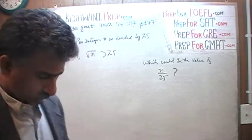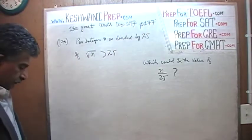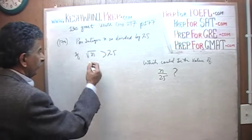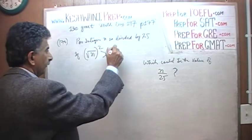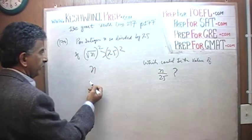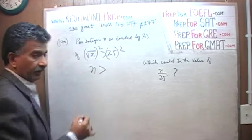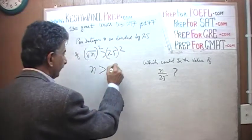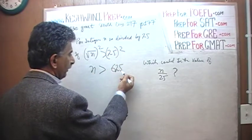We know that the square root of n is more than 25. If you want to square both sides, that becomes n, and that is more than 25 times 25. 25 times 25 is 625. So whatever it is, it's more than 625.